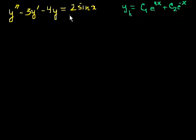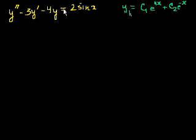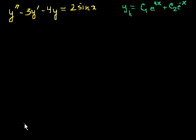To get the general solution of this non-homogeneous equation, I take the homogeneous solution and add a particular solution that satisfies the equation — meaning when you take the second derivative, minus 3 times the first derivative, minus 4 times the function, you actually get 2 sine of x. We'll use the method of undetermined coefficients.